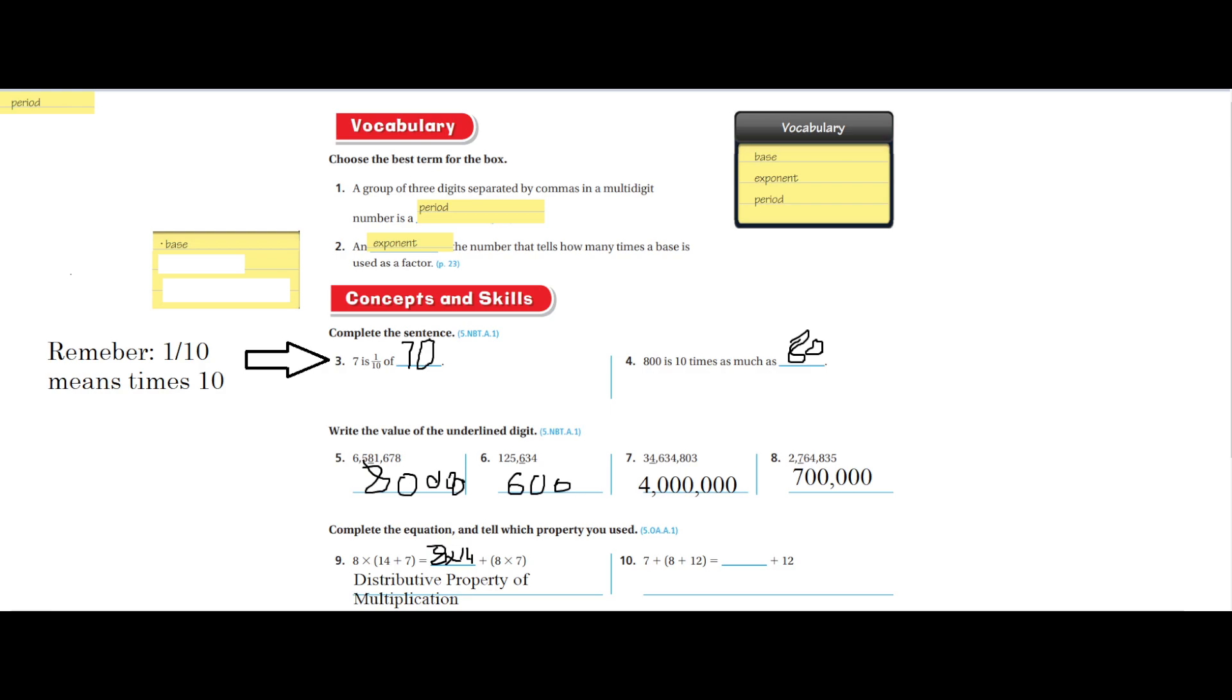So now let me do this for the next problem, number ten. It's going to be seven plus parentheses eight plus twelve equals seven - I'm going to write seven plus eight, put that in parentheses, and plus twelve. Now guess what? What property is this? If you said associative property of addition, then you're correct. So let me just use my text.